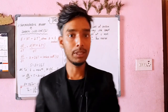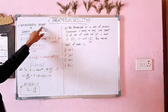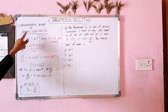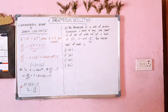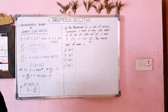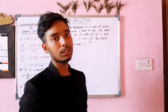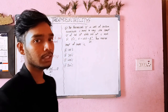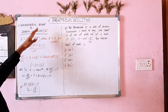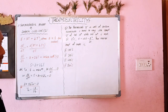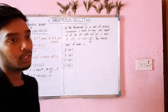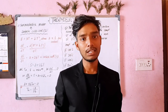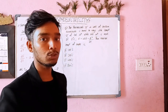Now we will read about thermoelectric power, also called the Seebeck coefficient. We had previously used the formula θ_n = (θ_c + θ_i)/2. Now from thermoelectricity we have the equation E = AT + BT², where A and B are constants.